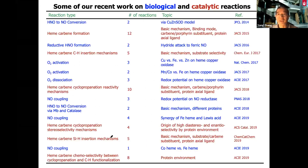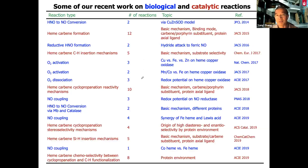Beyond static structures, we are also interested in reactions — chemical reactions — not only for biological reactions, but also some catalytic reactions. Catalysts are important for chemical synthesis, and especially green chemistry is very important. We have published more than 50 or about 60 different chemical reactions.